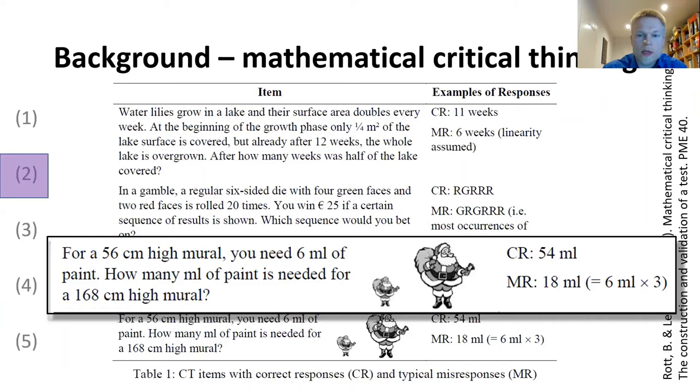Again, you need to critically check your results to solve this item. The test is rated dichotomously: one point for each correctly solved item and zero points for each item that is not solved correctly.